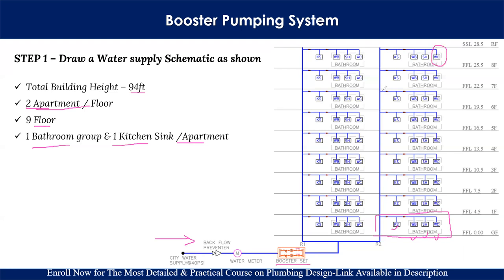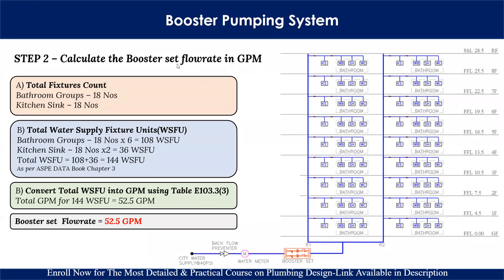Step two is to calculate the booster set flow rate — how much water flow rate is required. The first part is to calculate the total fixture count. There are nine floors, each with two apartments. One apartment has one bathroom group and one kitchen sink. Total number of bathroom groups: 9 × 2 = 18. Total number of kitchen sinks for the complete building: 18. Now we calculate the total WSFU — water supply fixture units.